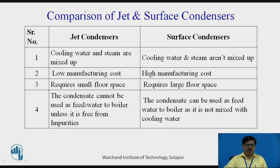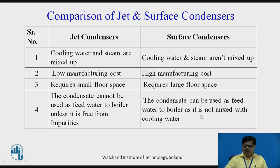In case of a jet condenser, because steam and water are mixed, the condensate cannot be reused as feed water to the boiler unless the cooling water is free from impurities. If cooling water is not free from impurities, we cannot use the condensate again as feed water. Whereas in case of a surface condenser, the condensate is only the condensed exhaust steam, so this condensate can be reused as feed water to the boiler as it is not mixed with the cooling water.